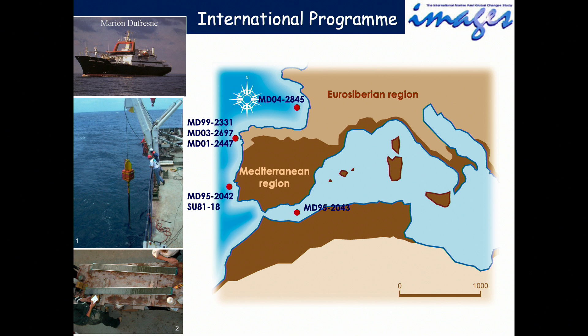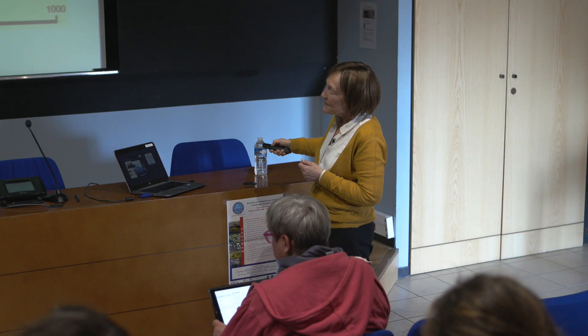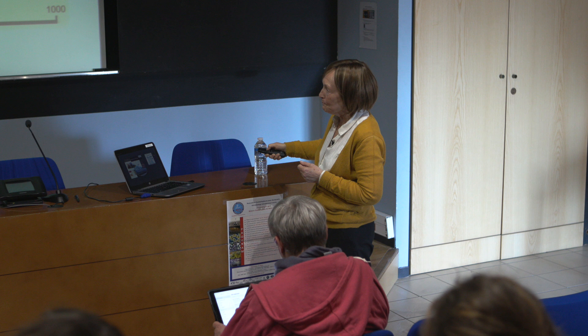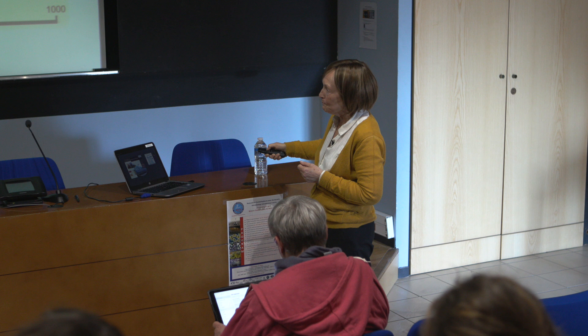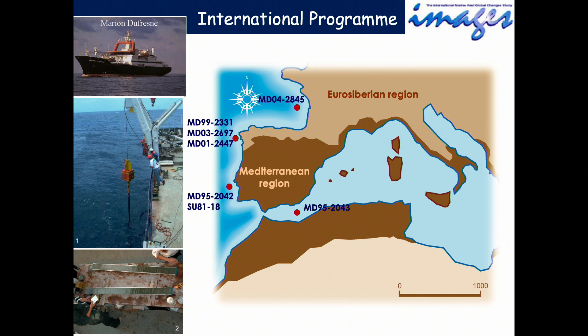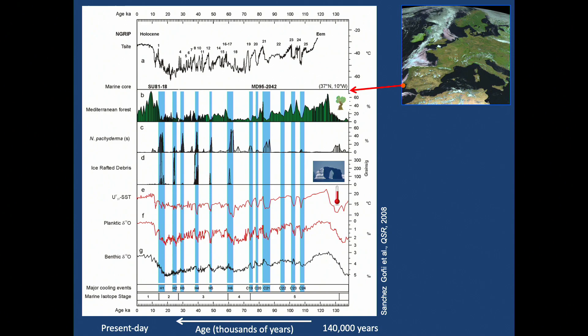These cores were collected in the framework of the international program IMAGES. Most cores were collected with the French oceanographic ship Marion Dufresne using a giant Calypso corer. The cores can be up to 72 meters long — very long in fact.